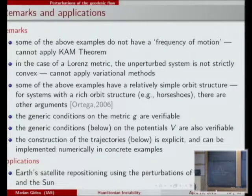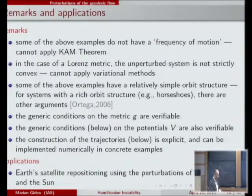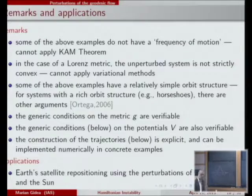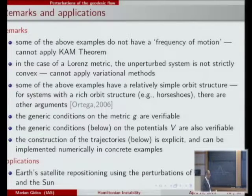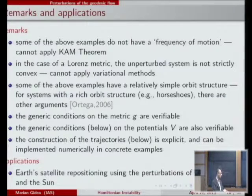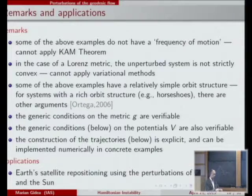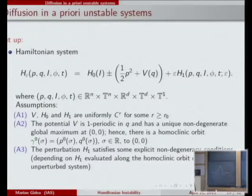The conditions on the potential for this theorem are explicit, and the method of constructing orbits whose energy grows to infinity is also quite explicit and can be implemented in practical examples — for instance, taking a satellite around the Earth and using quasi-periodic perturbations by the Moon and Sun to change the inclination of the orbit at essentially zero cost.